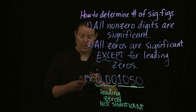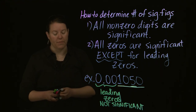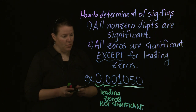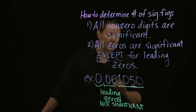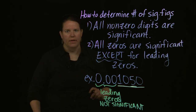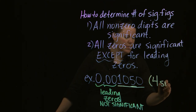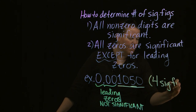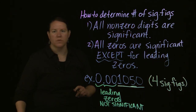Trailing zeros are zeros that come after the five. So in this number, there are four significant figures, and we can say that with absolute certainty.